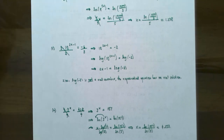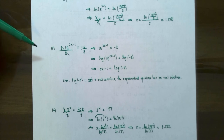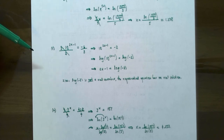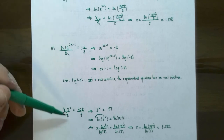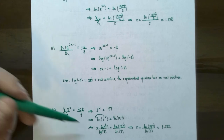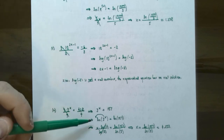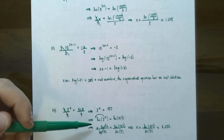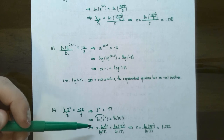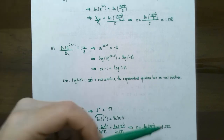To summarize: isolate the exponential expression first, then use a logarithm. If the base is 10, use the common log. If the base is e, use the natural log. If the base is anything other than 10 or e, you can choose either — common log or natural log — and you'll get the same answer.